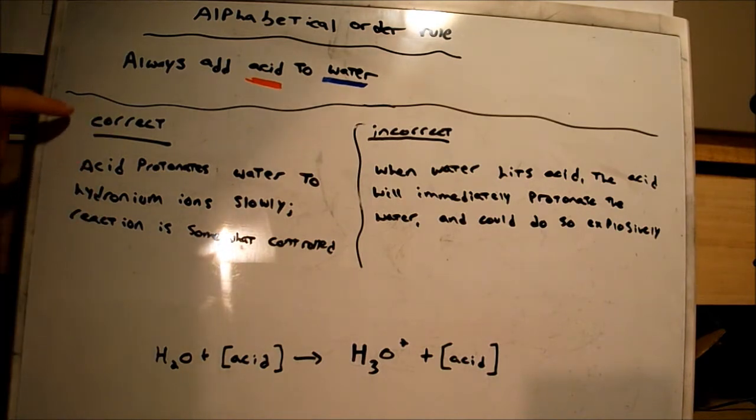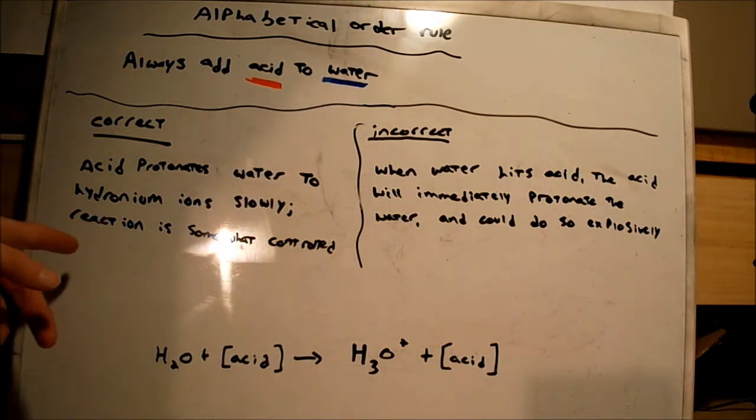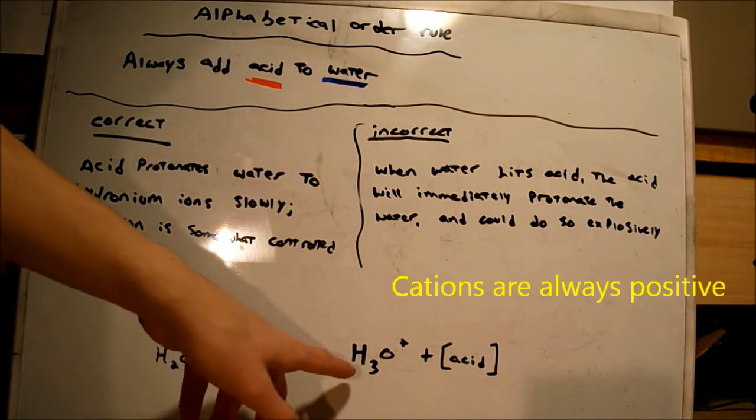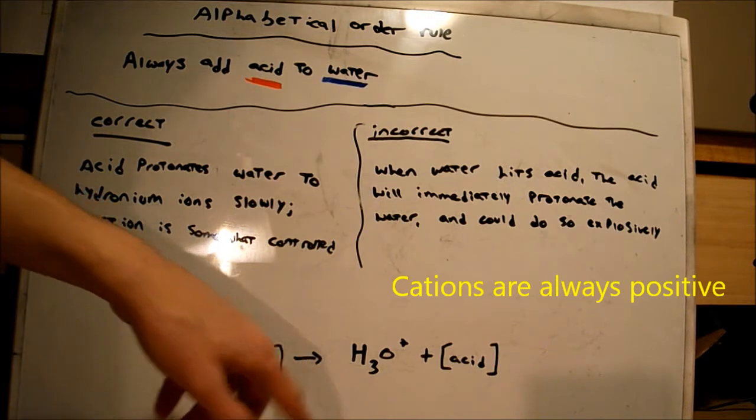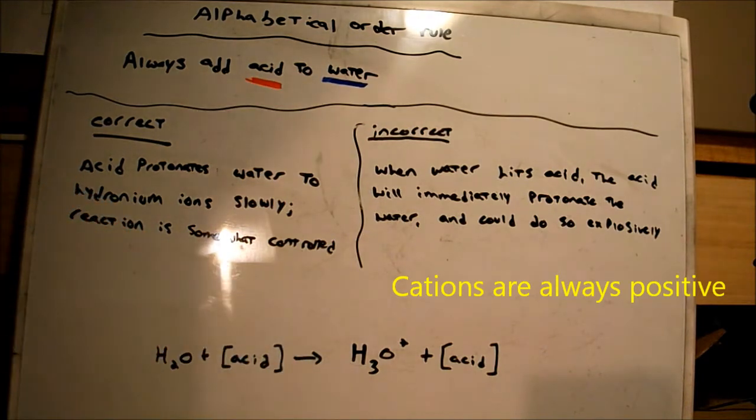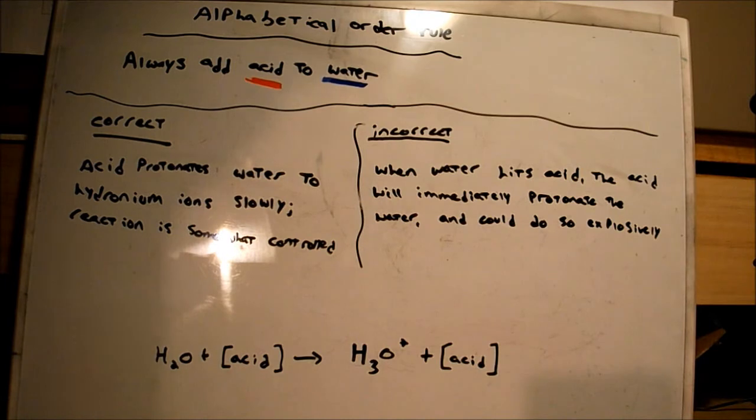The correct way, when you add acid to water, the acid protonates or adds a proton to the water to form hydronium ions or H₃O⁺. The plus is there because H₃O is a cation. The reaction is somewhat controlled.